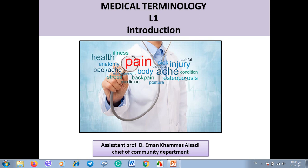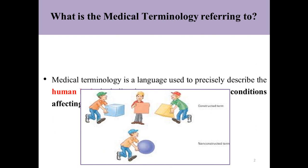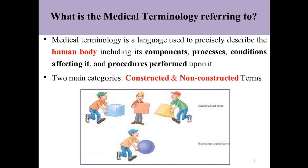Hi, dear medical students. Today we will talk about medical terminology — this is lecture one. First of all, we have to know there are different types of terms used in medicine. Medical terminology is a language used to precisely describe the human body, including its components and processes, conditions affecting it, and also the procedures performed upon it. There are two main categories: constructed and non-constructed terms.